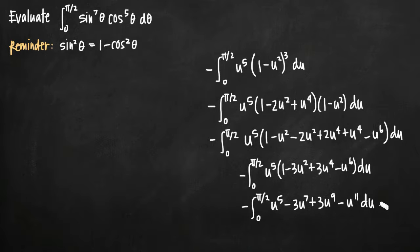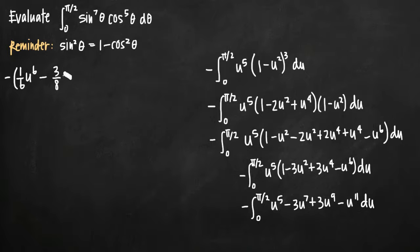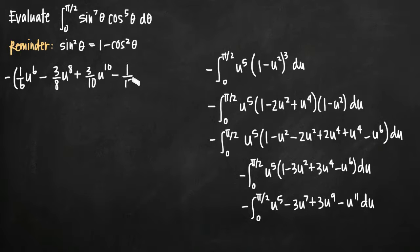Now we can easily integrate. We reverse the power rule — adding 1 to the exponent and dividing by the new exponent. So we get negative times one-sixth u to the sixth, minus three-eighths u to the eighth, plus three-tenths u to the tenth, minus one-twelfth u to the twelfth. We evaluate that on the range 0 to pi over 2.